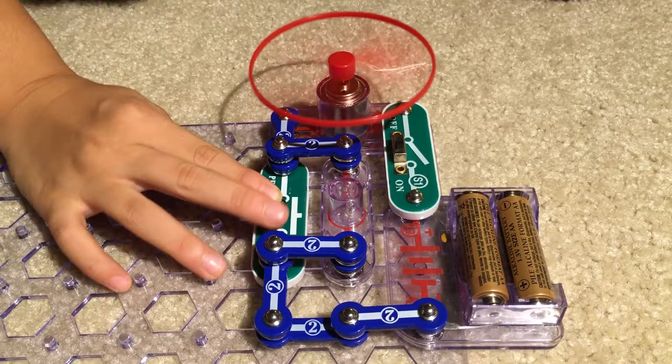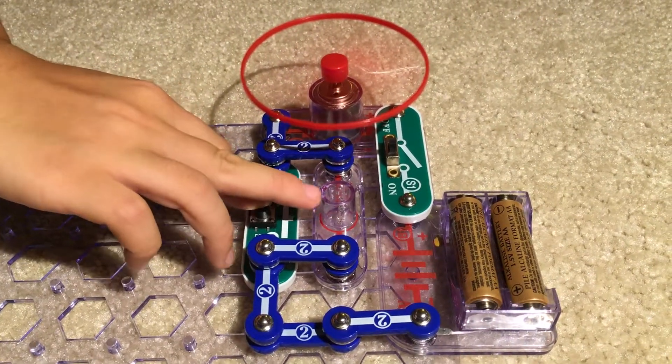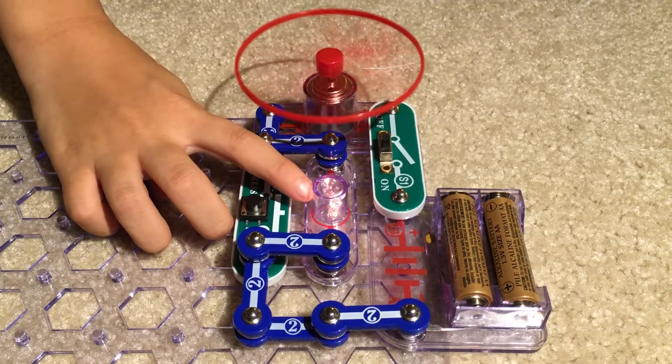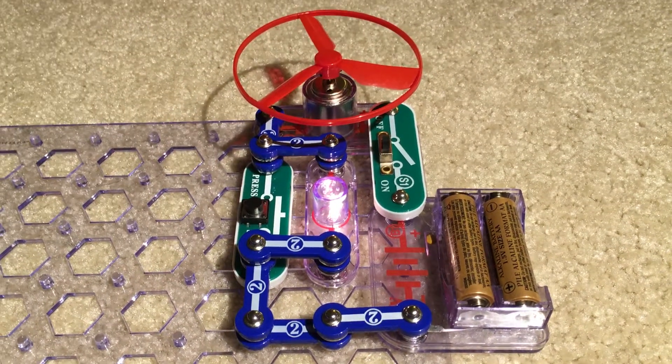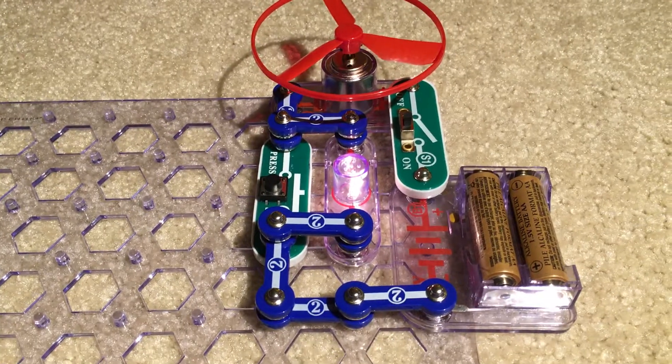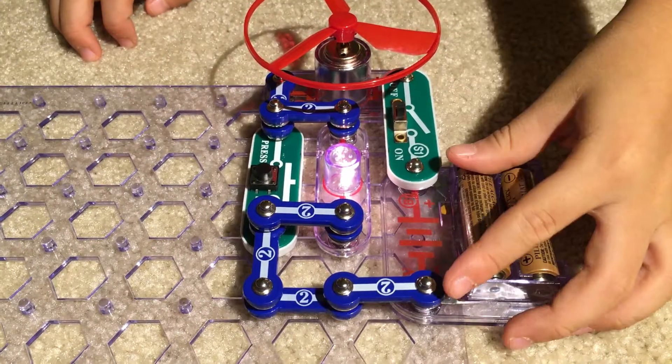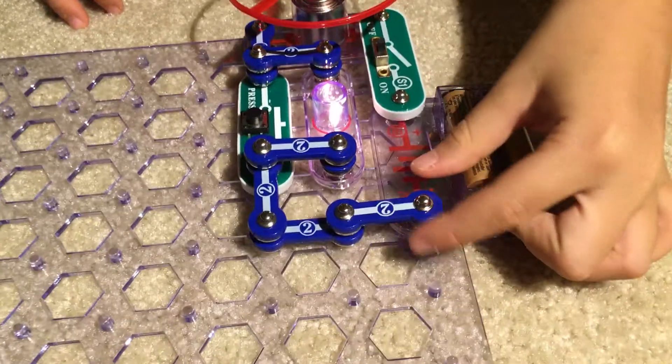If you press this, the lamp will stop glowing and the fan will start spinning. When you release it, the lamp should slowly gain its brightness until it reaches the brightest.